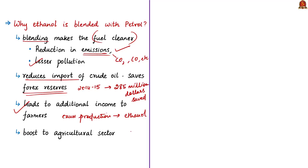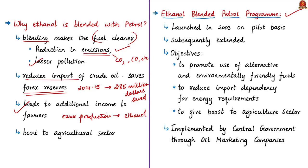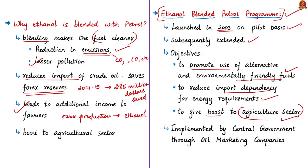The Ethanol Blended Petrol (EBP) Program was launched by the central government in 2003 on a pilot basis, subsequently extended to 21 states and 4 union territories, and is now extended to all of India except Andaman and Nicobar and Lakshadweep Islands. The program's objectives are to promote alternative and environment-friendly fuels, reduce import dependency for energy, and give a boost to the agricultural sector.